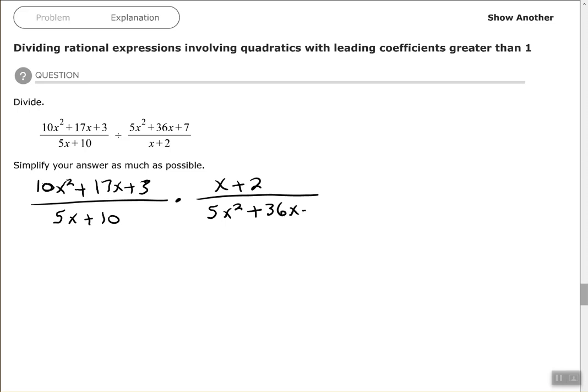And then after we rewrite it, we want to factor. So I have 10x² + 17x + 3 that I need to factor. I'll come up here and start off my AC method: 10 times 3 is 30, and factors of 30 that give me a sum of 17.